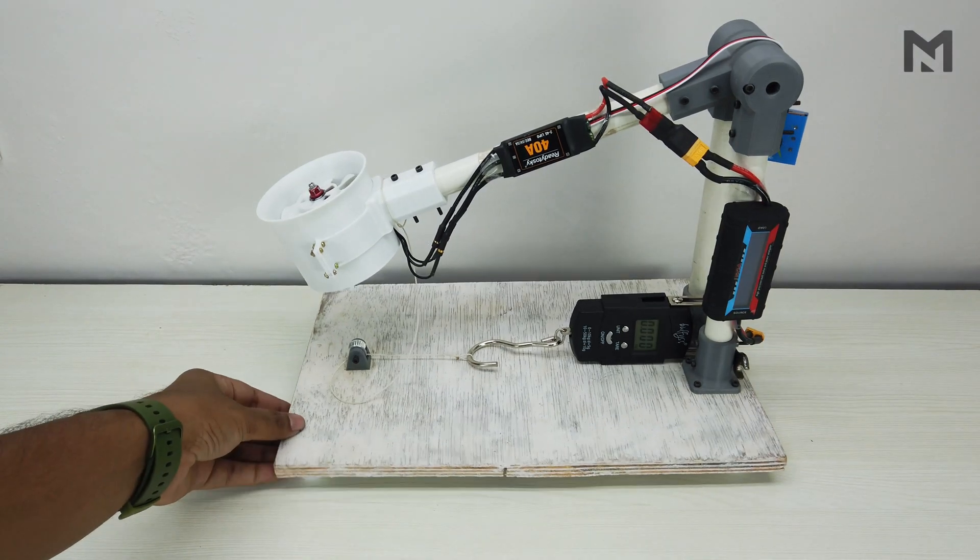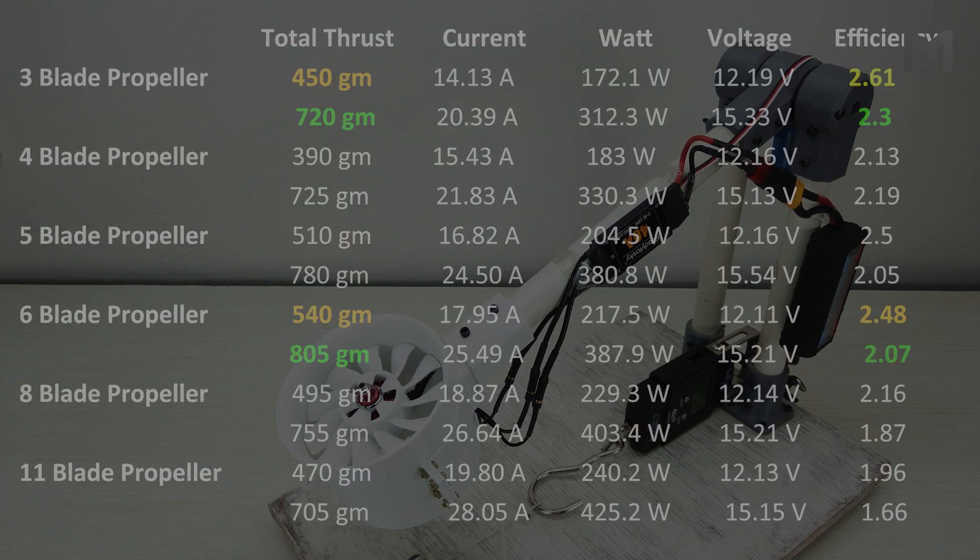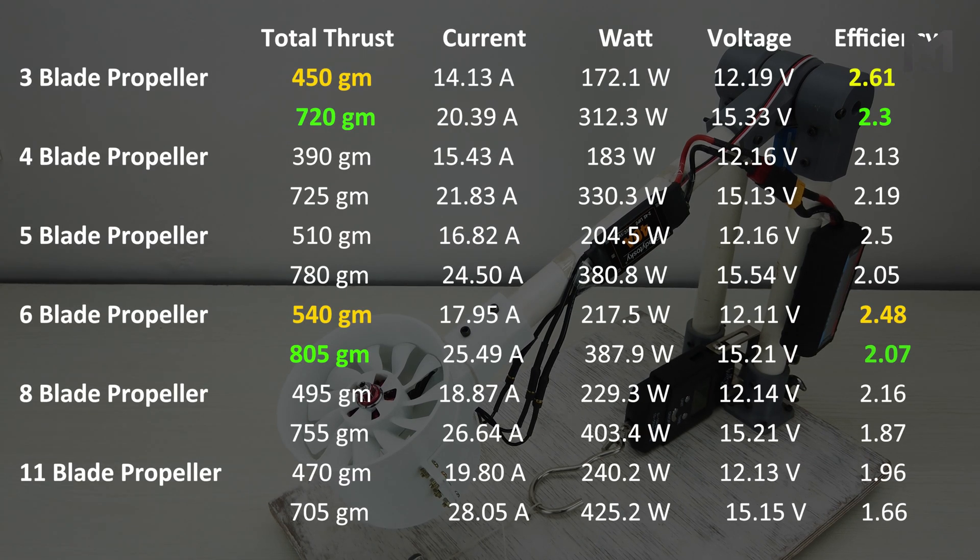Here our thrust test is over for all the propellers. Now it's time for the observation part. Here are the test results which we have obtained from the thrust test. Discussing the 3S battery, the 3 bladed propeller is highly efficient. It produced 450 grams of thrust at an efficiency of 2.61, while the 6 bladed propeller produced 540 grams at an efficiency of 2.48.